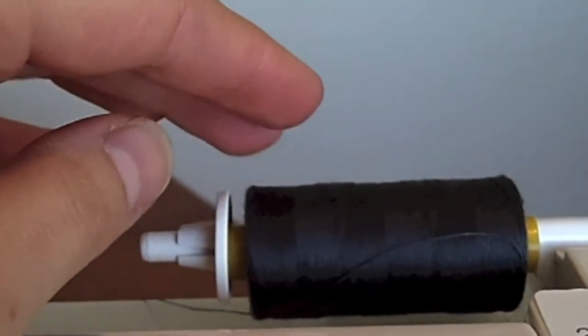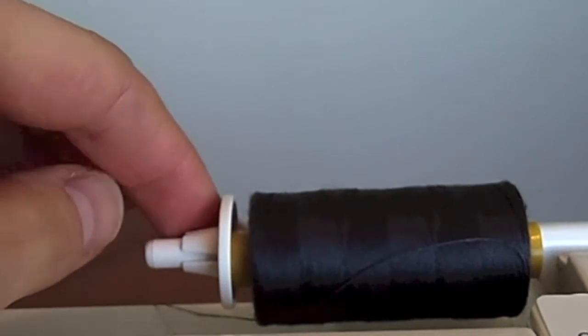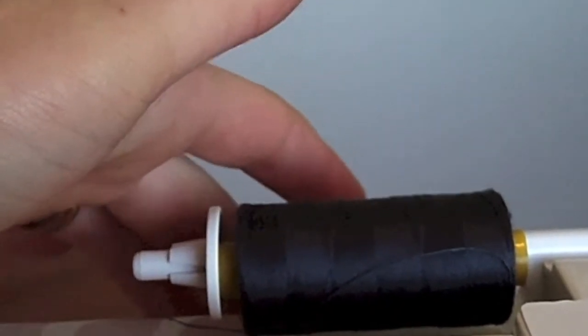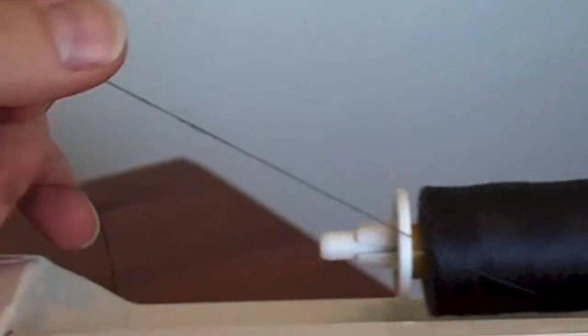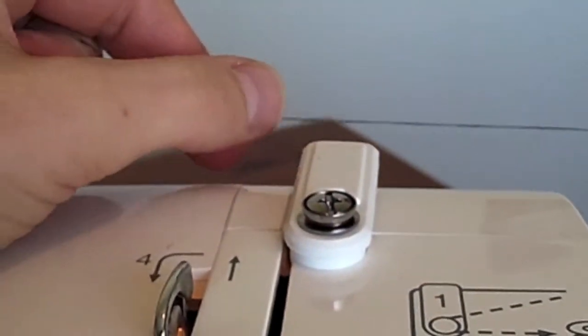I've already put my thread onto the spool pin, and because it's a horizontal spool pin I've secured it in place with the disc there. So I'm going to grab my thread and you should have a thread guide at the top of your machine there.